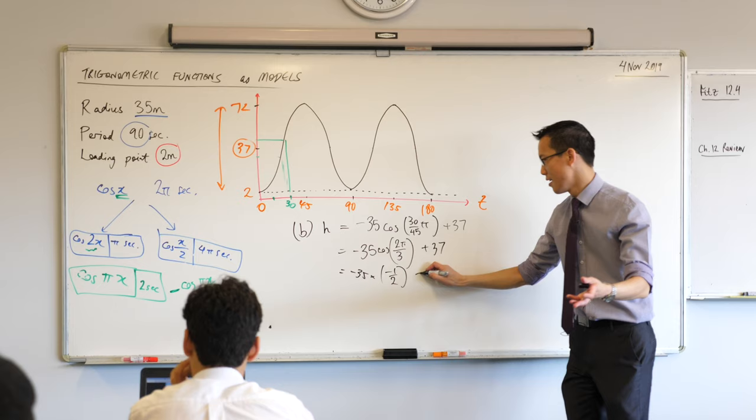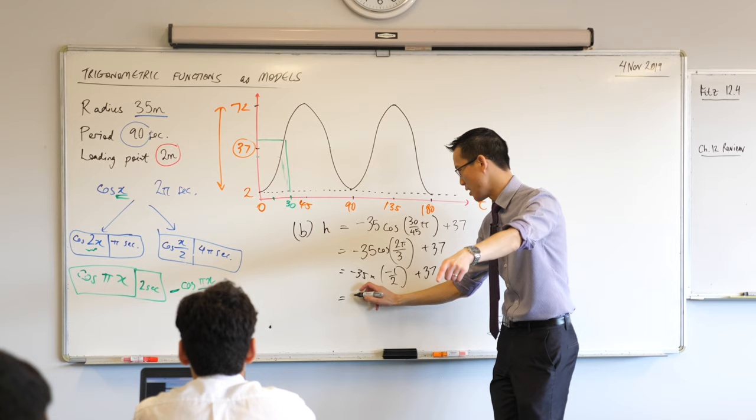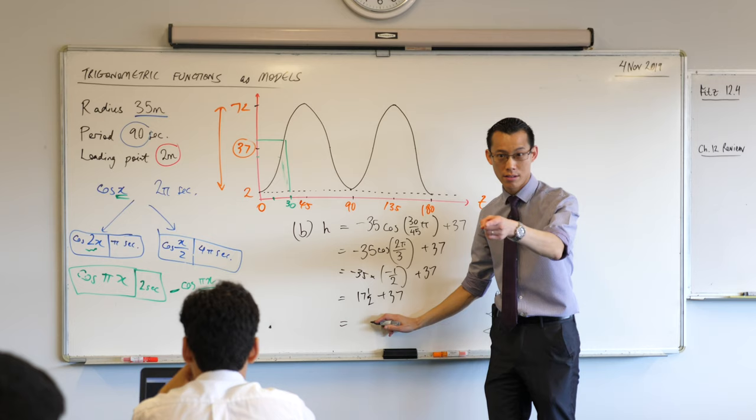There's my 37. Half of 35. We already worked out this before when Zachy was doing the other graphs. It's 17 and a half. Plus 37. Is that the 54.5 that you guys worked out? Nailed it.